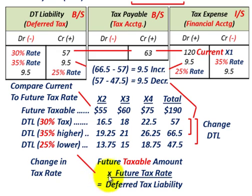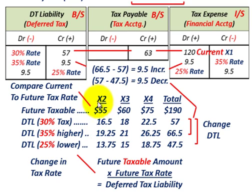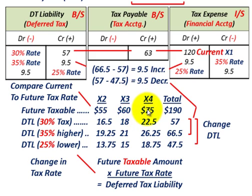The deferred tax liability equals the future taxable amount times the future tax rate — and this is where we have a change in tax rate. The temporary difference reverses itself for book purposes over years X2 through X4 with future taxable amounts of $55,000, $60,000, and $75,000, totaling $190,000. At the 30% tax rate, applying it to each year's future taxable amount gives a total deferred tax liability of $57,000.